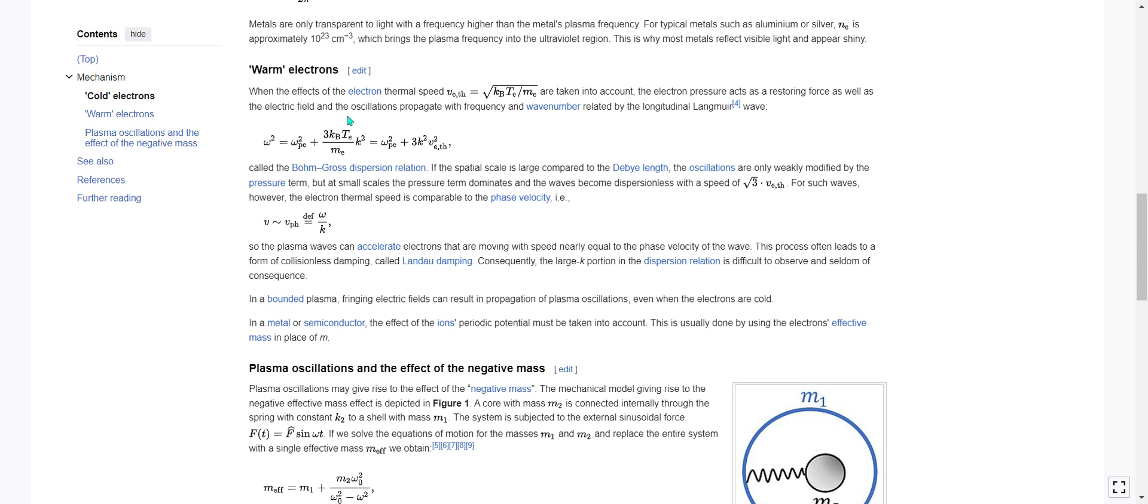Here is the dispersion relation for the longitudinal Langmuir wave. Omega squared equals omega sub p e squared plus 3 k sub b t sub e over m sub e k squared, which equals omega sub p e squared plus 3 k squared times v sub e thermal squared. So this is called the Bohm-Gross dispersion relation.